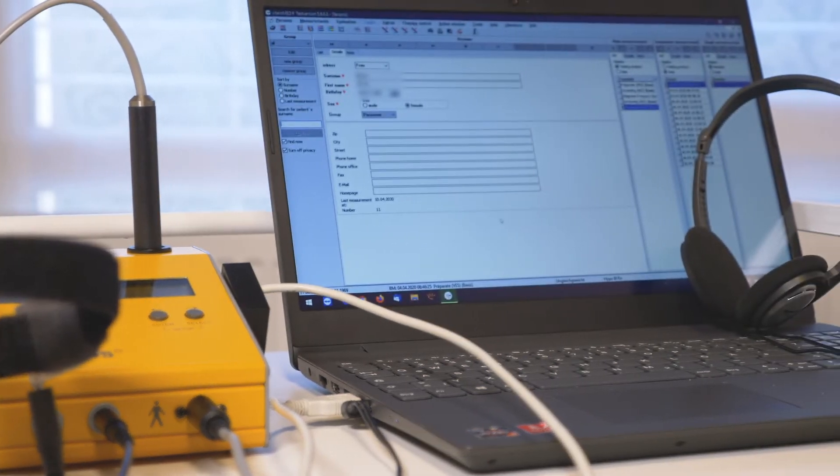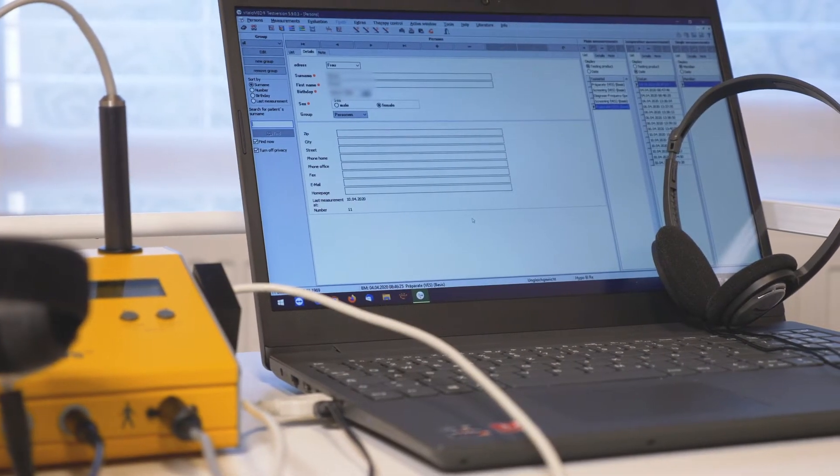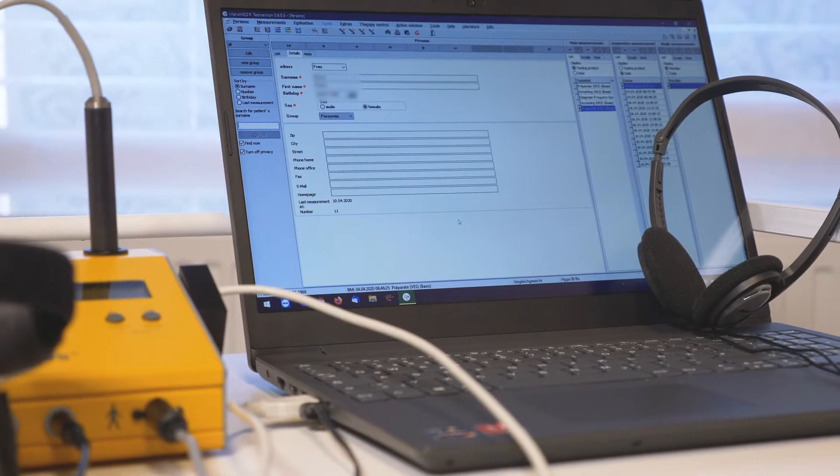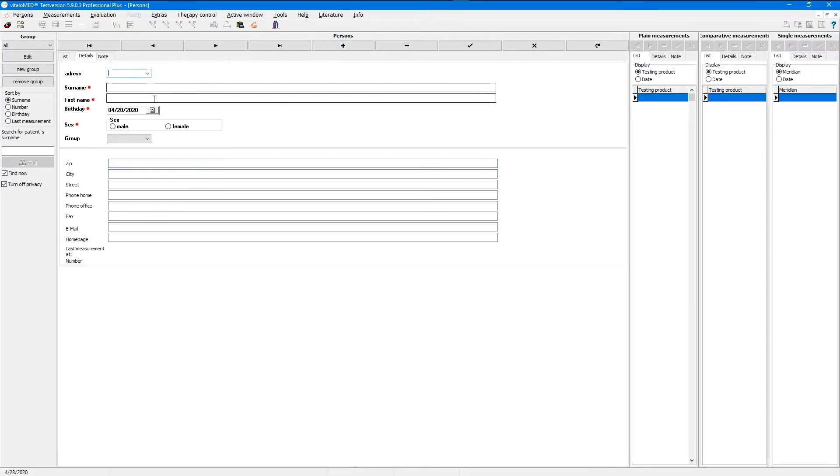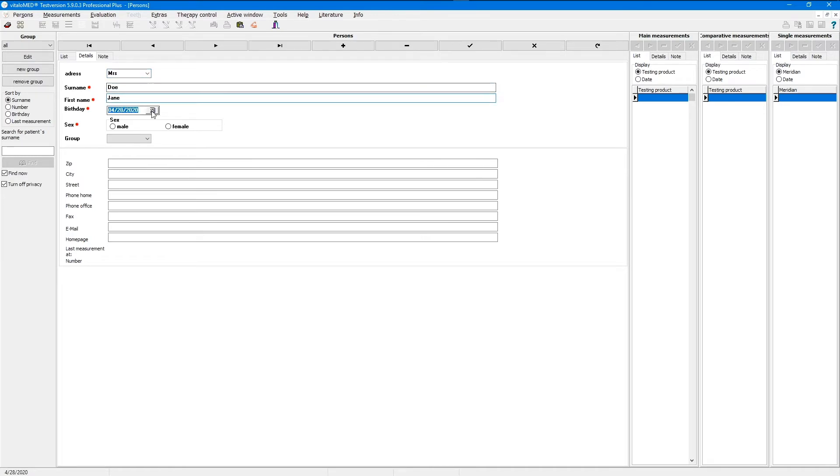First of all, we have to create the patient's personal data. Click the plus button to open a new file. The essential information is featured with a red dot. Needed is surname, first name, date of birth and sex. After registering these data, click the button with the check mark for saving.